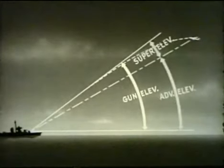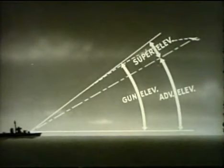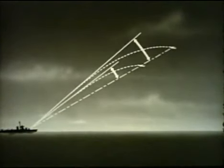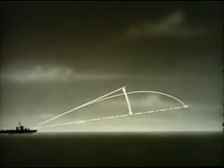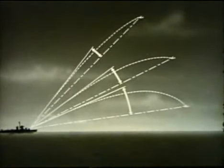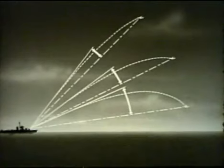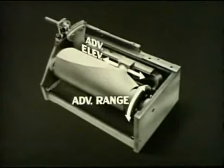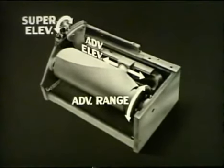Gun elevation is the sum of superelevation and advance elevation of the target. Superelevation increases as advance range increases, but not in direct proportion. Superelevation decreases as advance elevation increases, again not in direct proportion. Thus, superelevation is determined by advance range and advance elevation, both of which are the inputs to this cam. The output is superelevation. There can be any number of ranges, and each range requires a different superelevation.